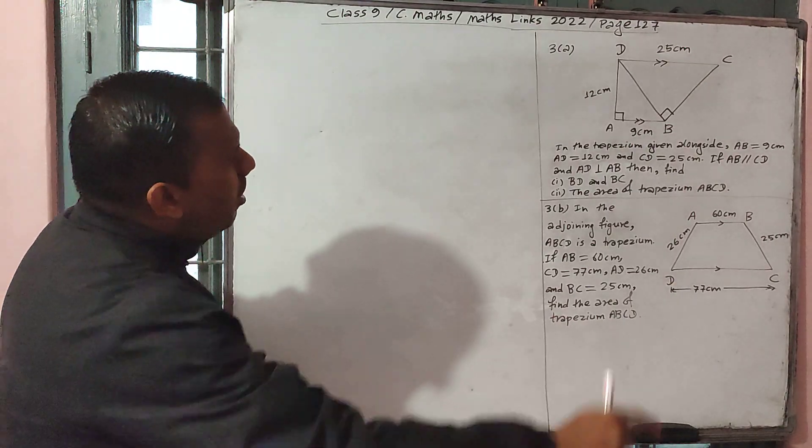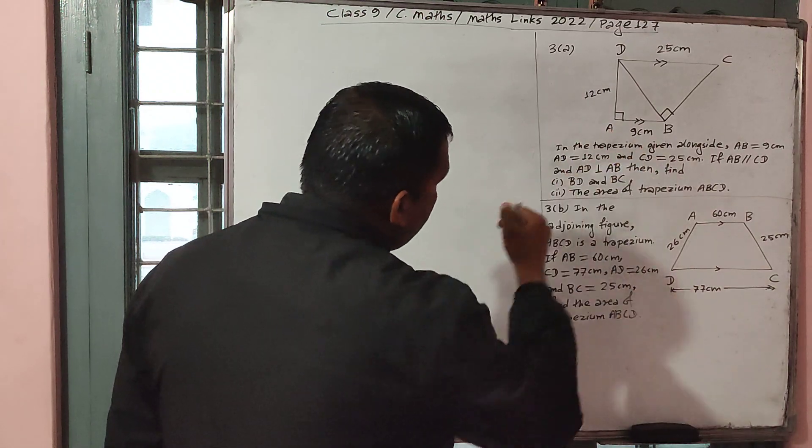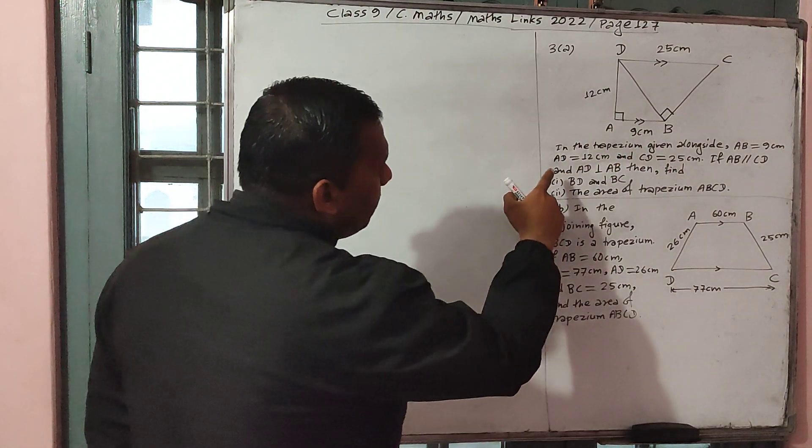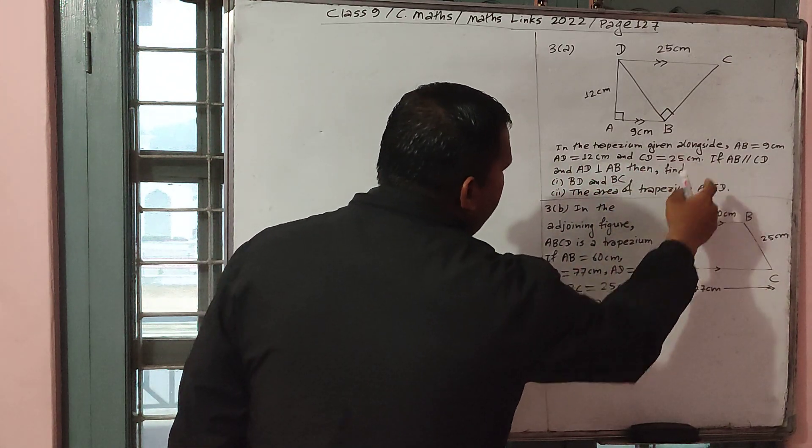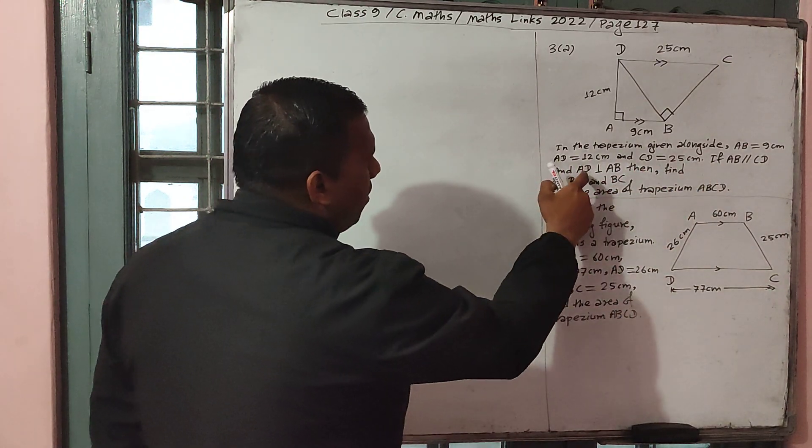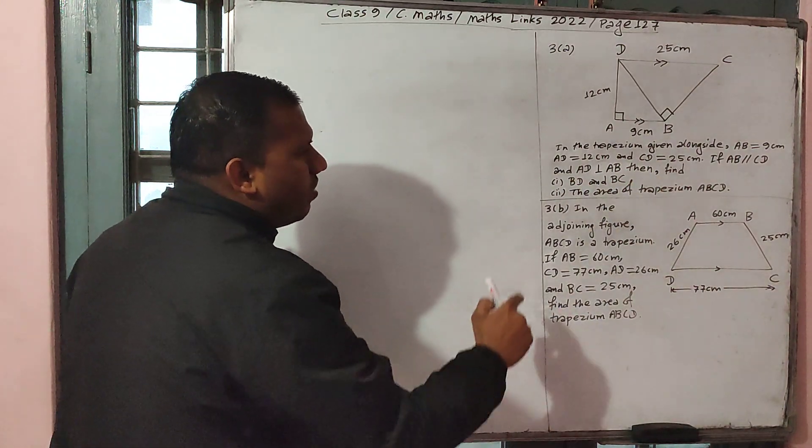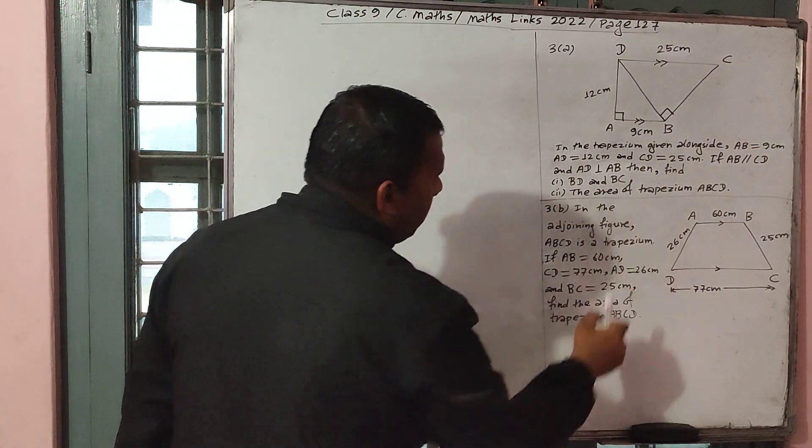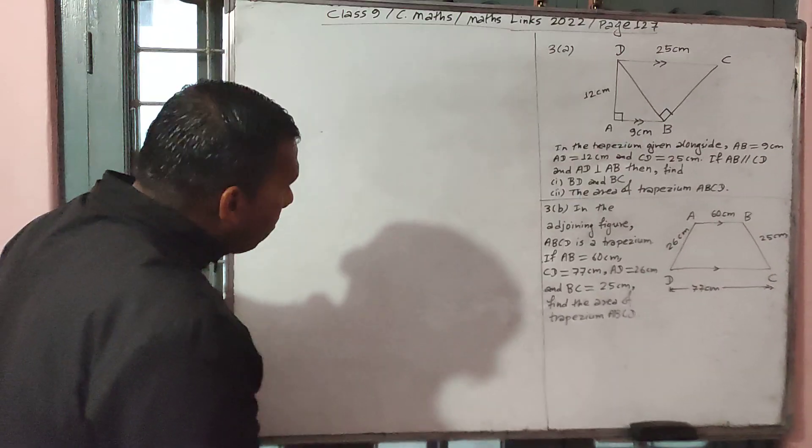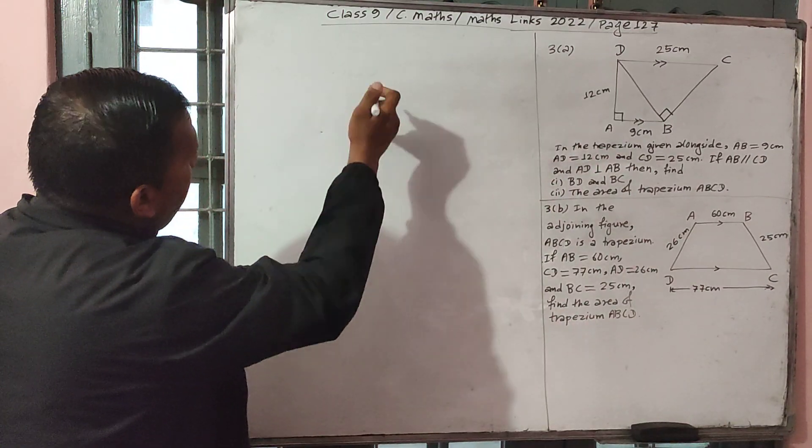Let us see question number 3A. In the given figure, ABCD is a trapezium. AB is 9, AD is 12, CD is 25. If AB parallel to CD and AD perpendicular to AB, then find first BD and BC, and second, the area of trapezium ABCD. That is all question number 3A.